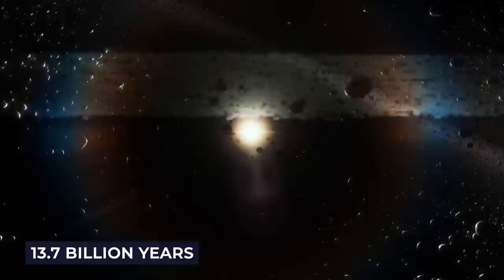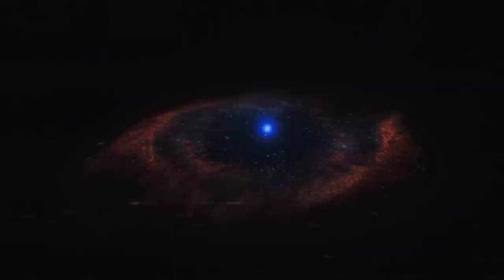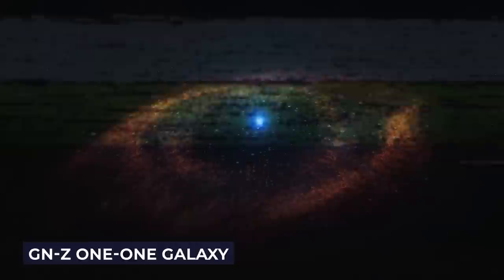However, the big question is how far Hubble can see into the past. The farthest object the Hubble has seen is the GNZ-11 galaxy, which dates back to 13.4 billion years ago. This is the limit of the telescope. Since the Big Bang occurred 13.7 billion years ago, there is a whole 300 million years we don't know about.